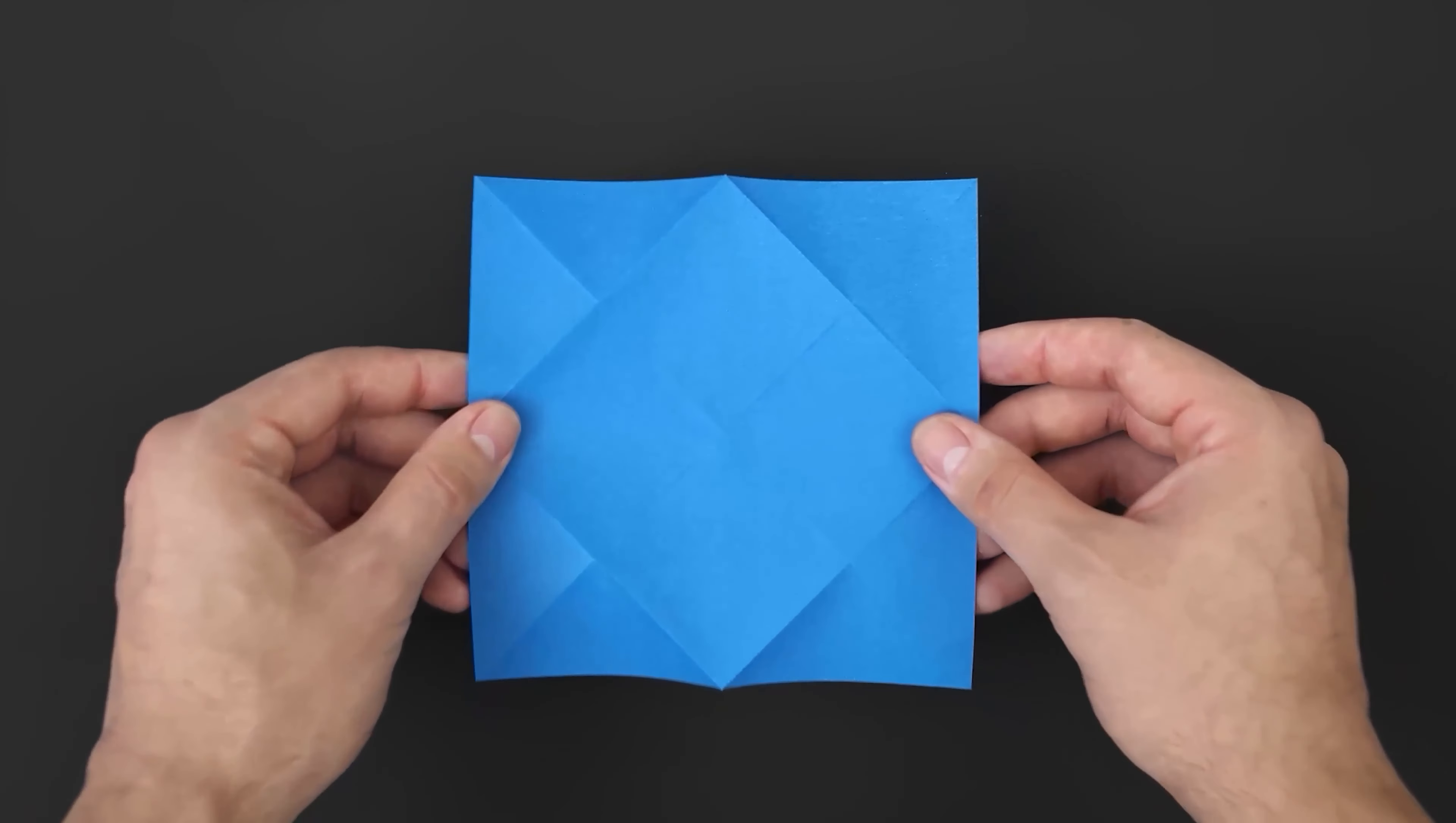Now we need to repeat the same step horizontally. So again we start by folding it in half, then fold the bottom and top sides to the middle. Unfold this step as well.